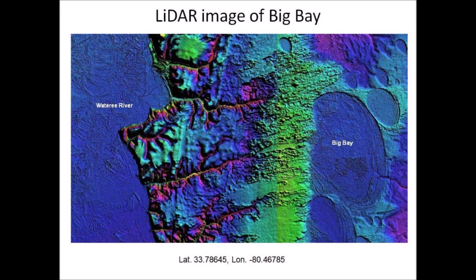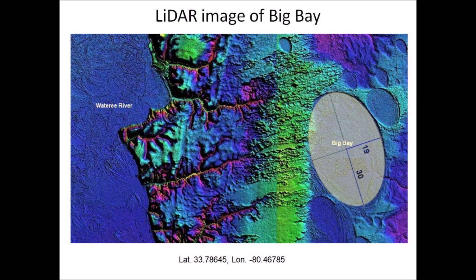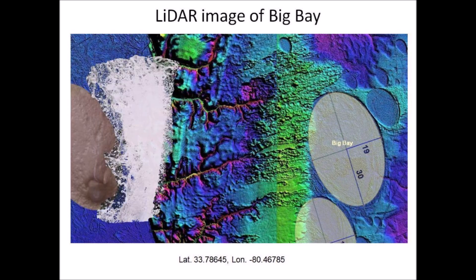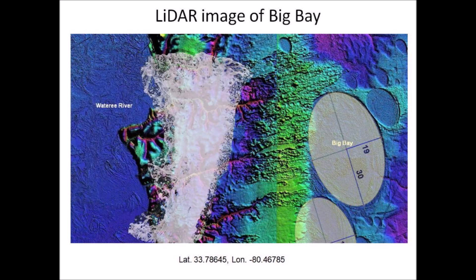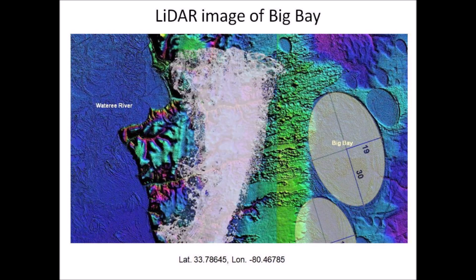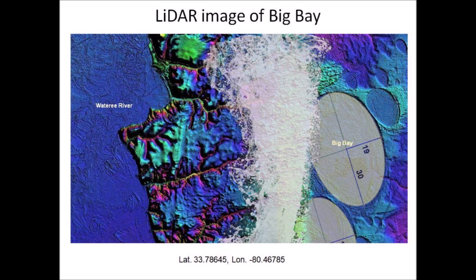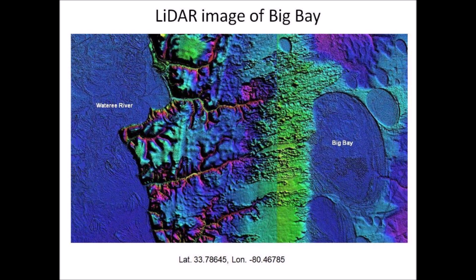This is a LiDAR image of Big Bay, also in South Carolina, which has a geological setting similar to Kelly Bay. Big Bay was formed by an impact adjacent to the Watery River, and there was also a large impact south of Big Bay. An impact on the Watery River created a tidal wave that dredged some sand from the riverbank; the wave carried the sand along fairly level ground and deposited it on the edge of Big Bay. As in the case of Kelly Bay, a projectile with a higher trajectory then impacted the layer of sandy deposits and made a small Carolina Bay.